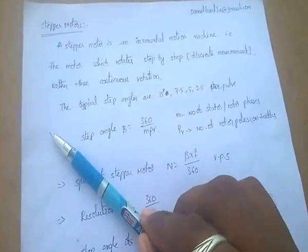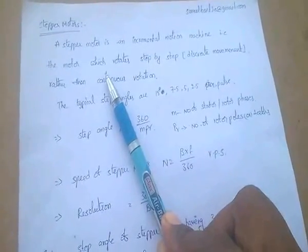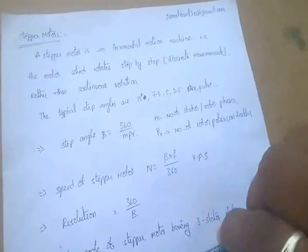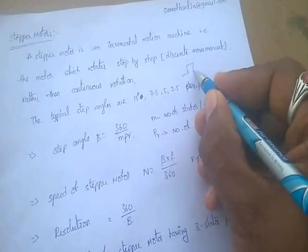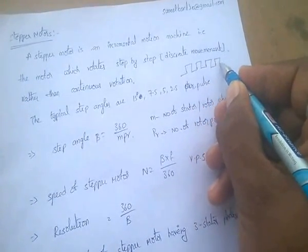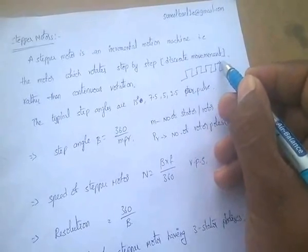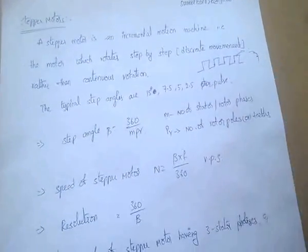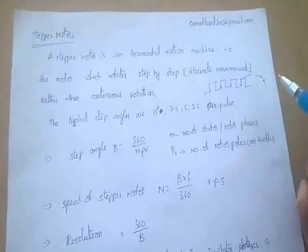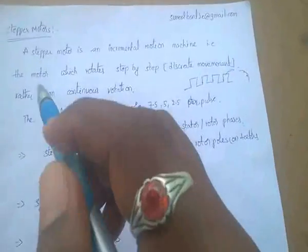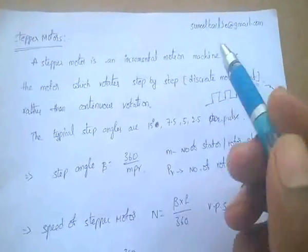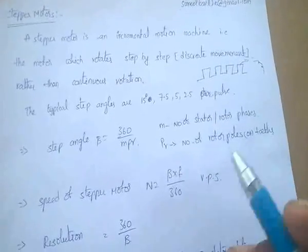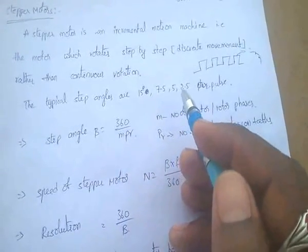Whenever we give a pulse to the stepper motor, it rotates some angle according to the pulse, then waits for the next pulse. The stepper motor runs step by step — it is a motor which rotates step by step rather than continuous rotation. The typical step angles are 15 degrees, 7.5 degrees, 5 degrees, and 2.5 degrees per pulse.